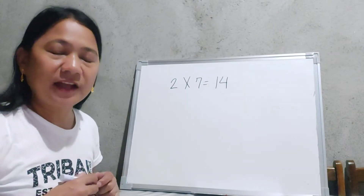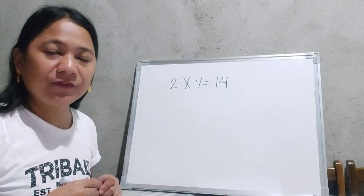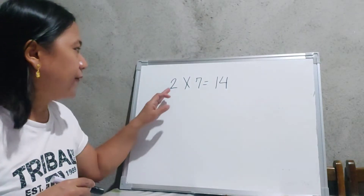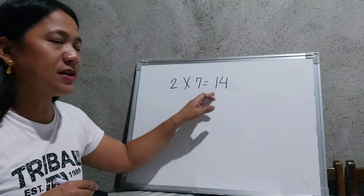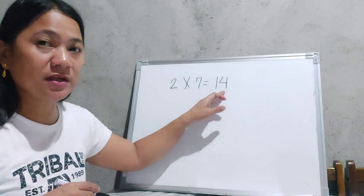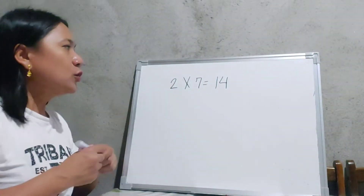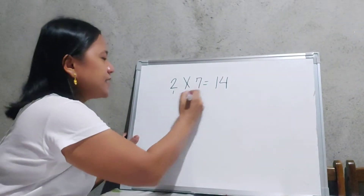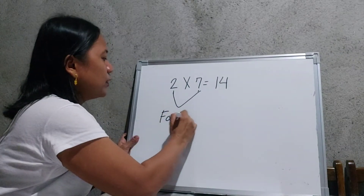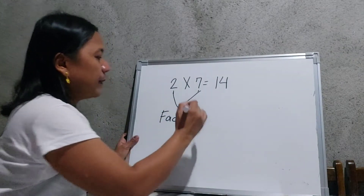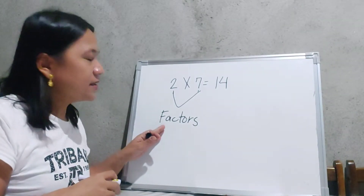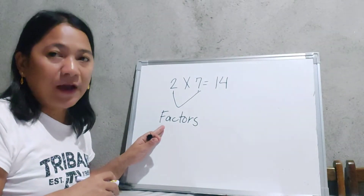Let us have another example to identify what the factors are. We have 2 times 7 is equal to 14. We all know that 14 is the product. Therefore, 2 and 7 are the two numbers that we multiply to get 14, and they are what we call factors.